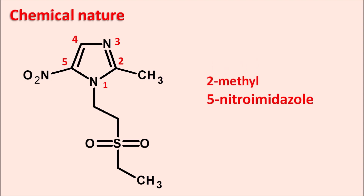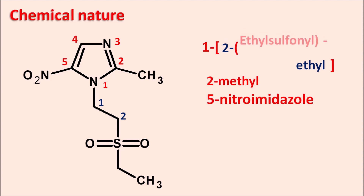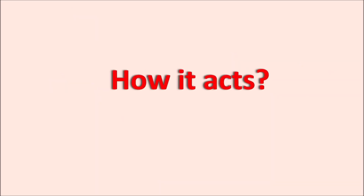At the second position of the imidazole ring, a methyl group is present. The side chain at the first position distinguishes tinidazole from metronidazole: metronidazole has a simple ethanol side chain, whereas tinidazole has an extended ethyl chain at position one. At the second carbon of this ethyl chain, a sulfonyl group is attached, further connected to another ethyl group. The full IUPAC name is 1-[2-(ethylsulfonyl)ethyl]-2-methyl-5-nitroimidazole.